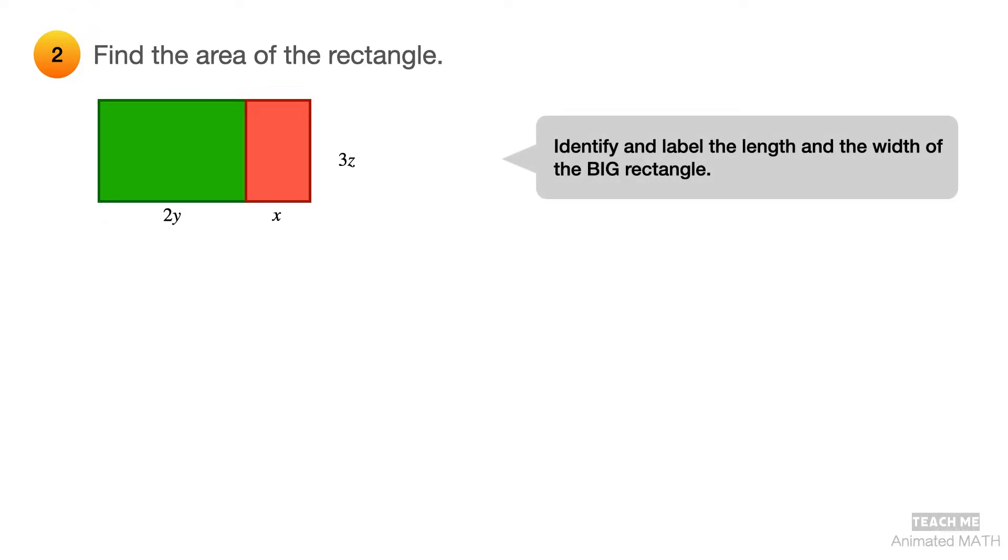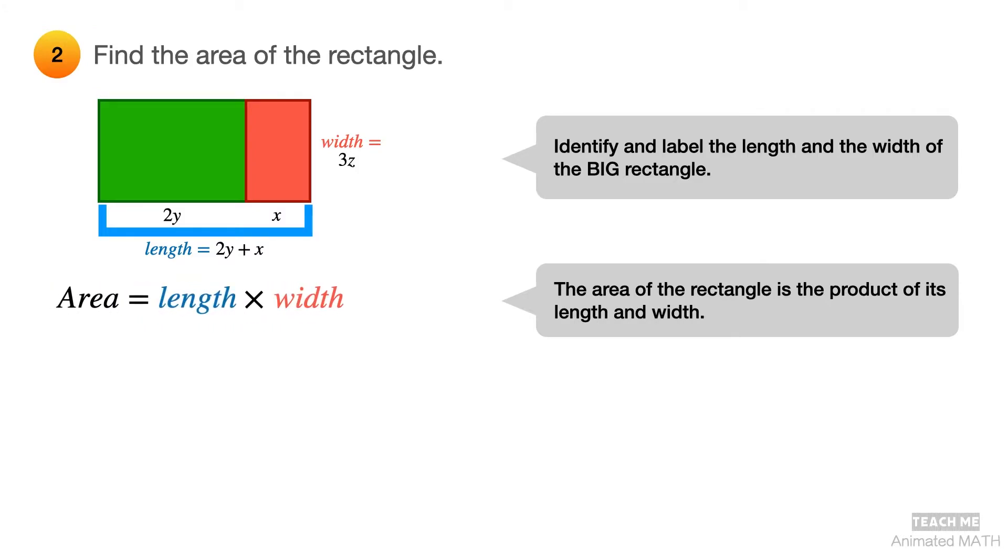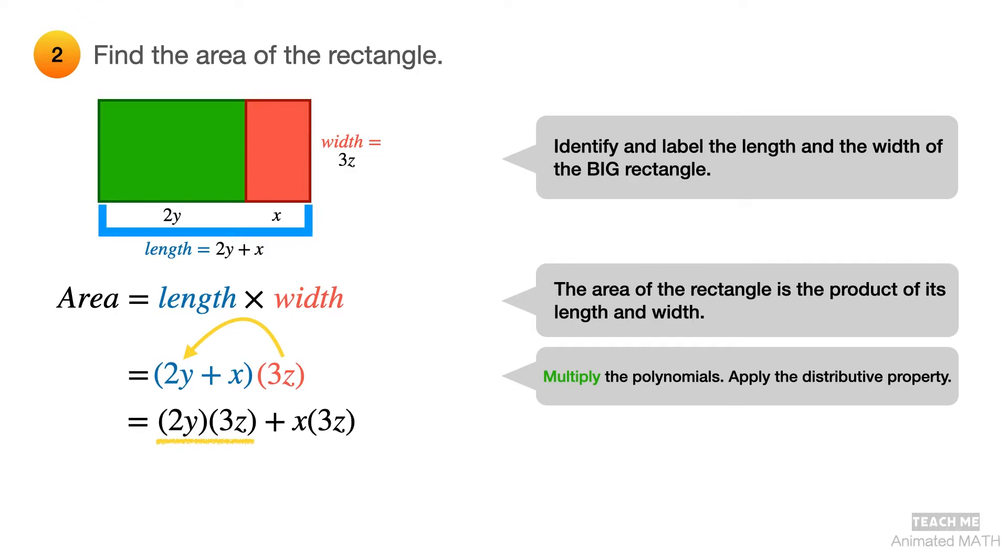Start by identifying and labeling the length and width of the big rectangle. The width is equal to 3z. Pretty straightforward, right? And the length is equal to 2y plus x. The area of any rectangle is equal to its length times its width. Substitute the values of the length and width. Apply the distributive property when you multiply the polynomials and expand the equation. And the final answer is 6yz plus 3xz.